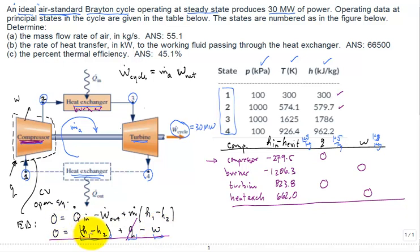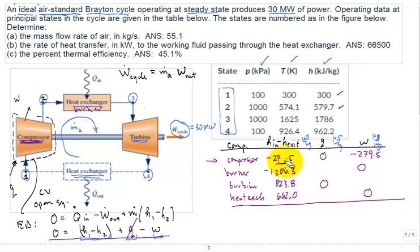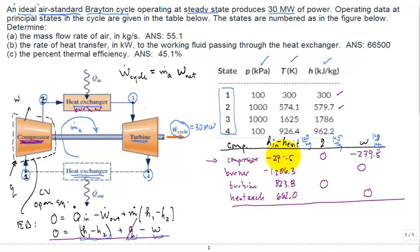So, the work is negative 279.5. Where did I get that from? Right here. All right. So, 279.5.